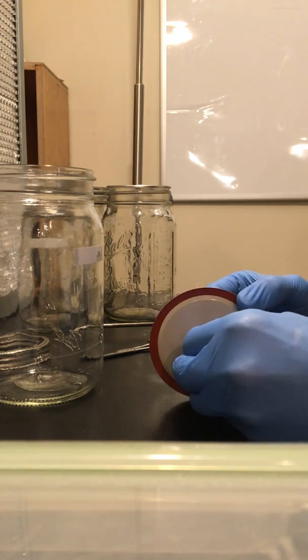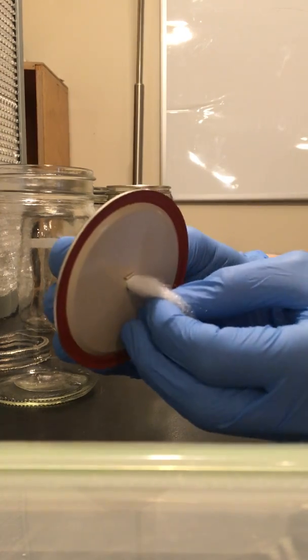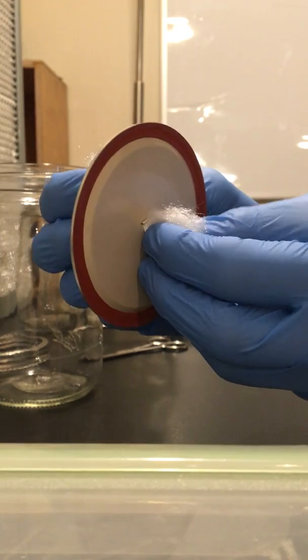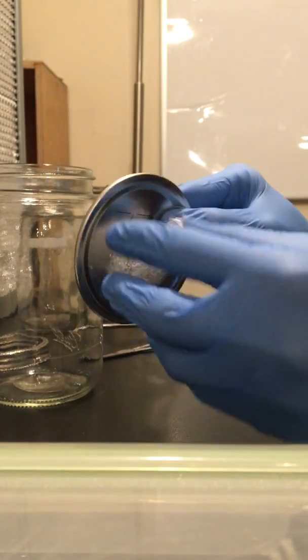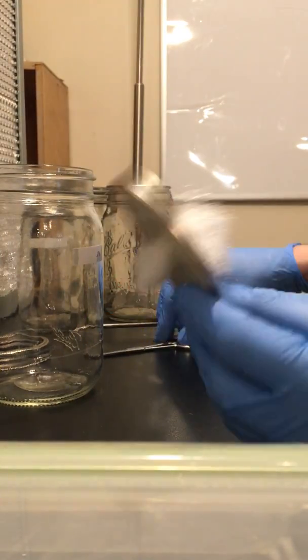Grab it from the other side. You kind of want to pull it through on both ends. Make sure it's nice and snug. And obviously we have an excess amount, so I'll just grab some scissors.